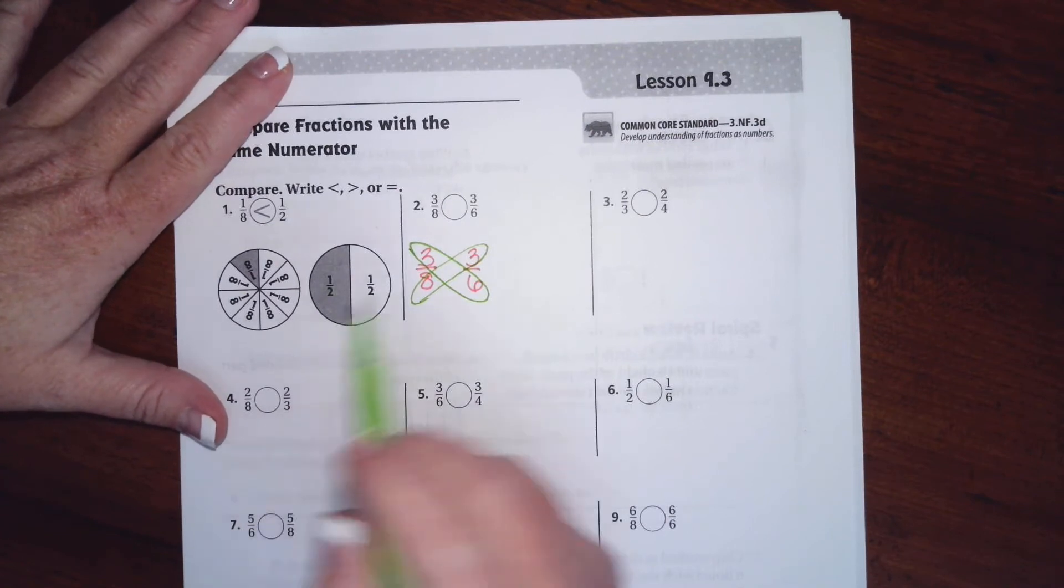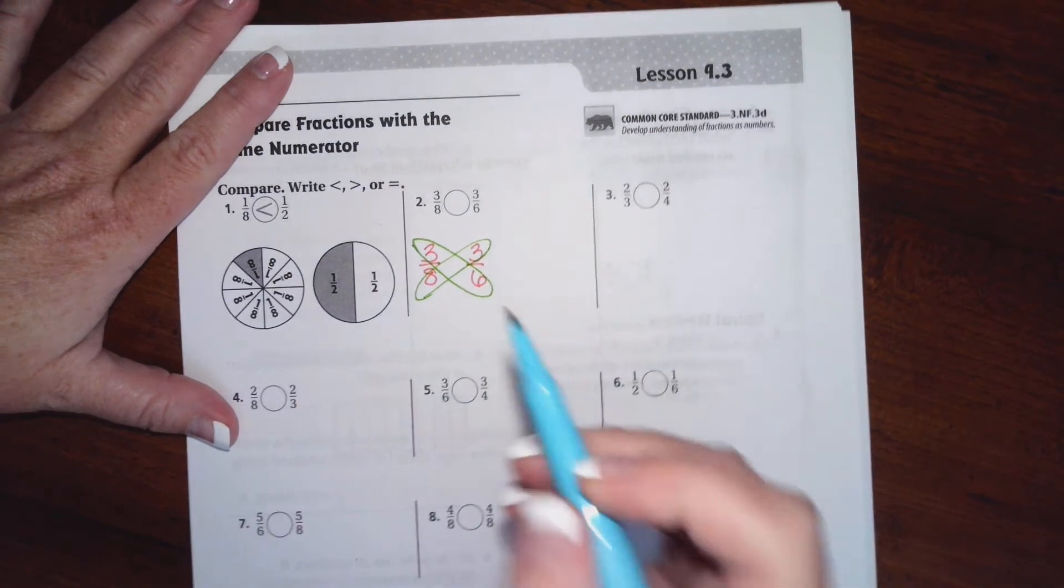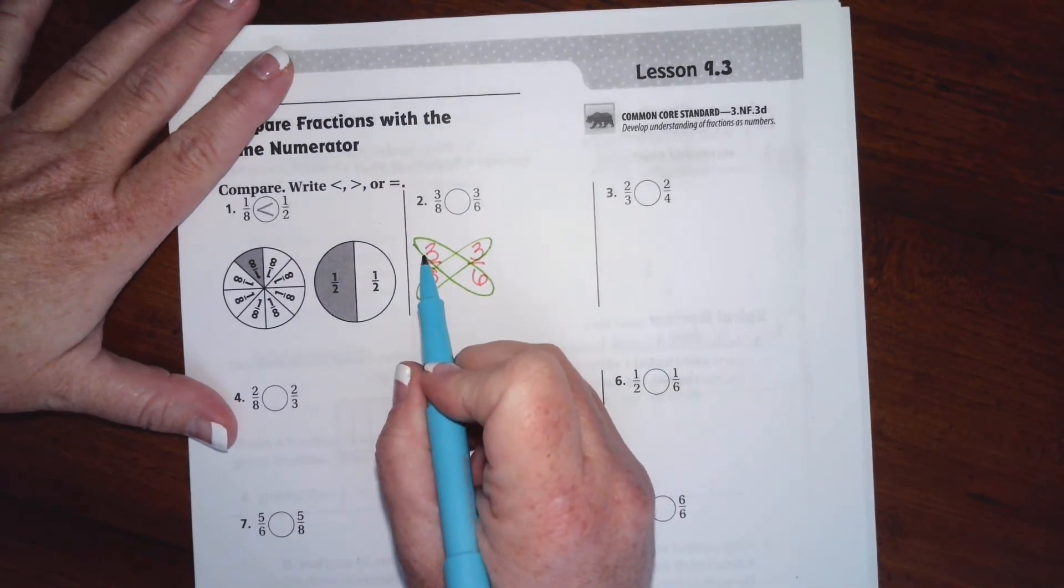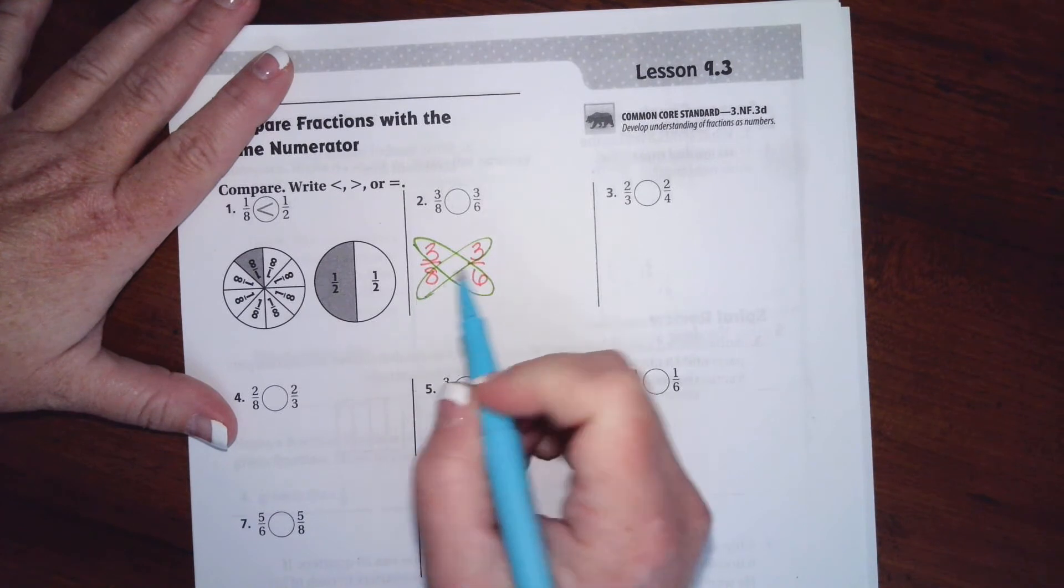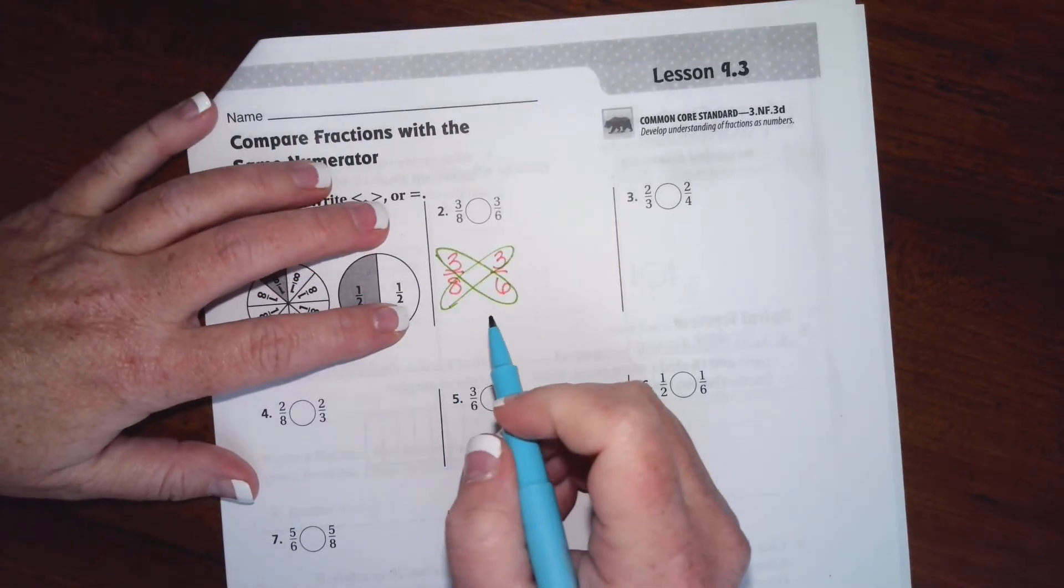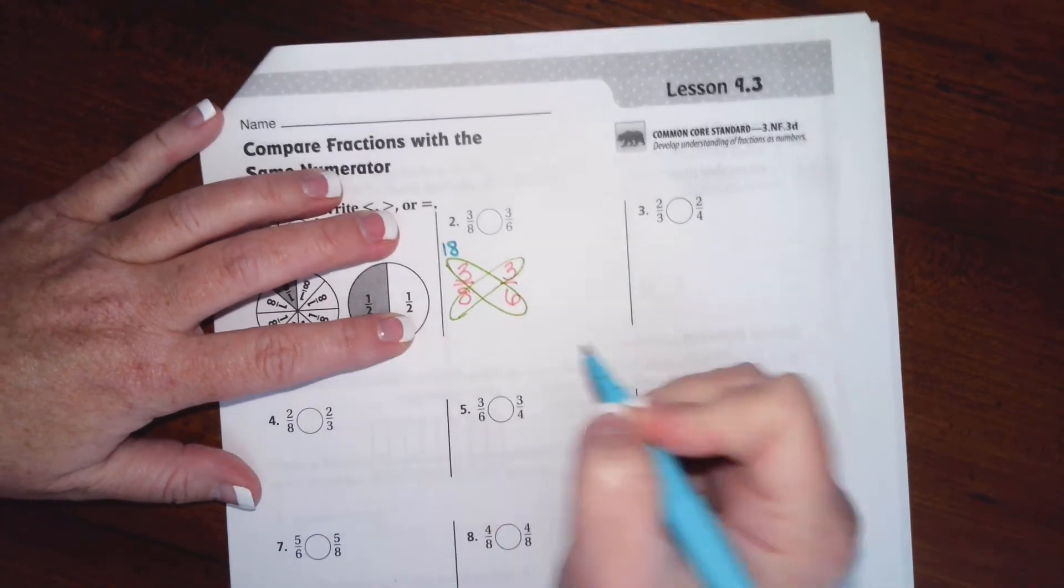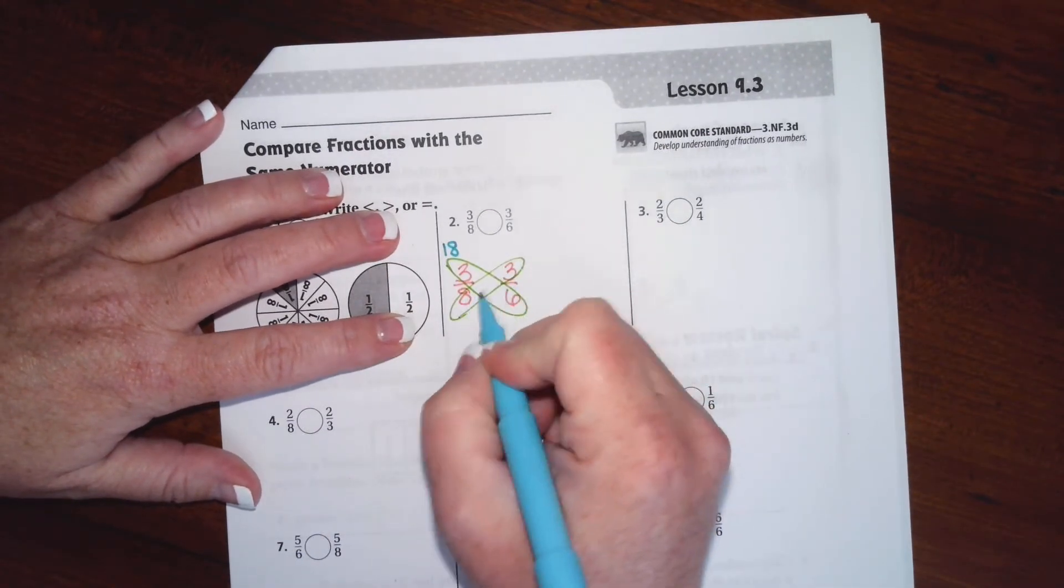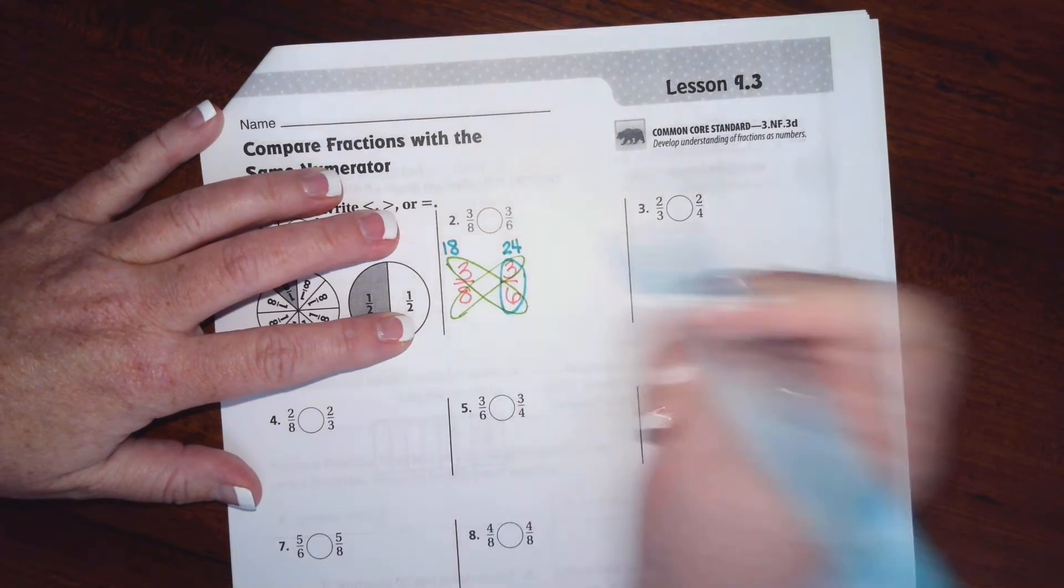We are going to - you can absolutely draw it out like this, no harm in that. I'm going to go ahead and do my butterfly method. So all I did is I'm taking the numerator of the first one with the denominator of the second one, and then doing the opposite. Above that, I'm going to write how much it is. So three times six is 18, three times eight is 24. That makes this one bigger.